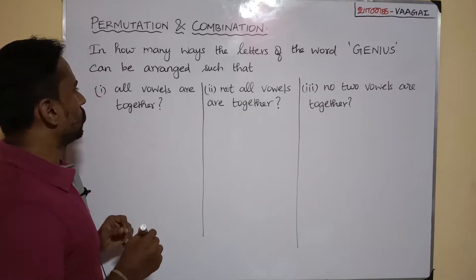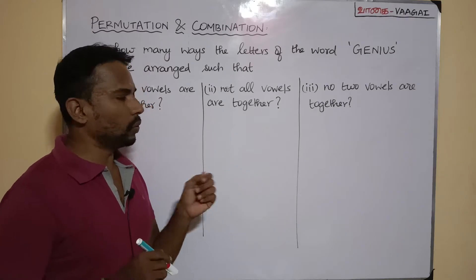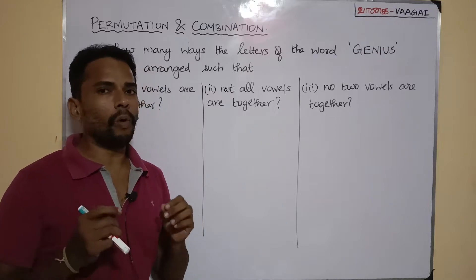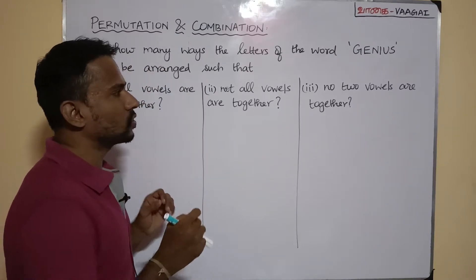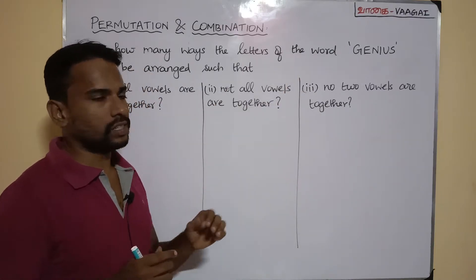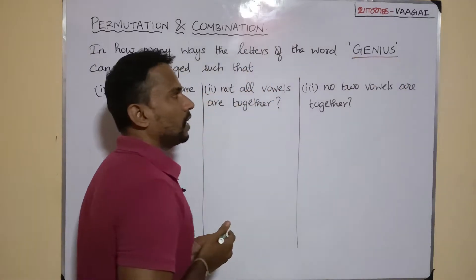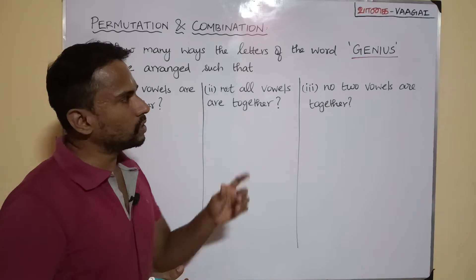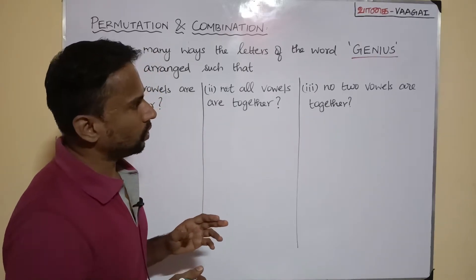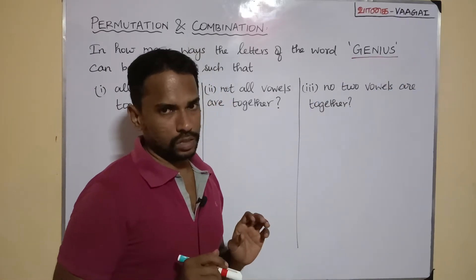The three subdivisions are: one, all vowels are together; two, not all vowels are together; and three, no two vowels are together. Before solving, let's check the word. Our word is GENIUS — G, E, N, I, U, S. It is a six-letter word with three vowels: E, I, and U, and three consonants: G, N, and S.